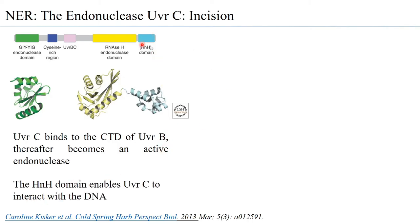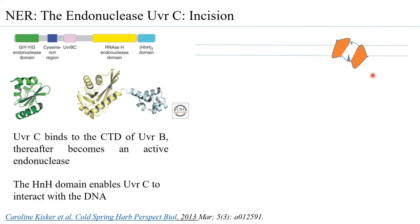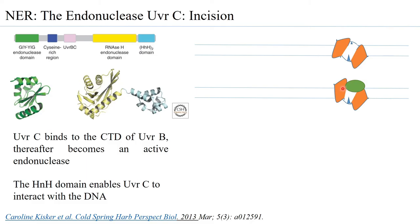UVR-C also has a domain called the HHH helix domain that enables it to interact with the DNA. When the pre-incision complex is formed and the binding domain for UVR-C in UVR-B opens up, UVR-C is recruited and binds to the UVR-B2 complex, showing a conformational change. Reports suggest that as soon as UVR-C binds, it tends to remain bound to the UVR-B2 closer to the damage — on the strand that has the damage — while the other UVR-B2 is removed.